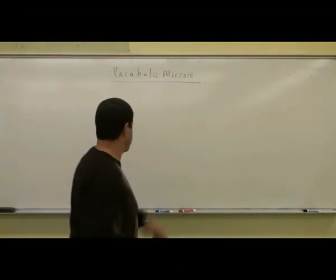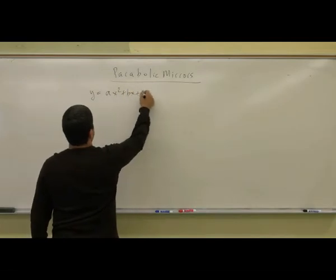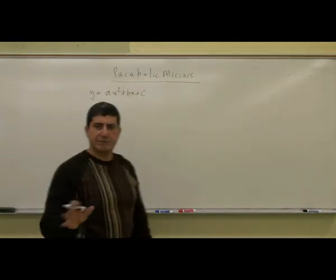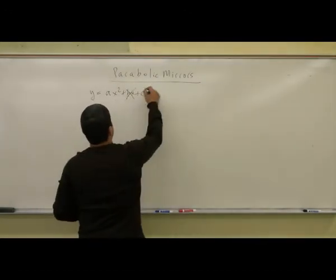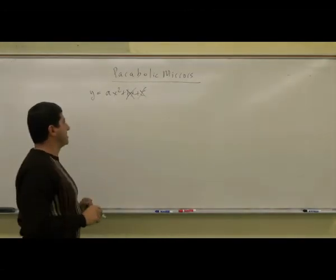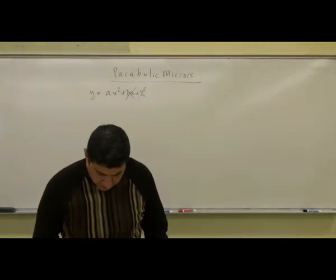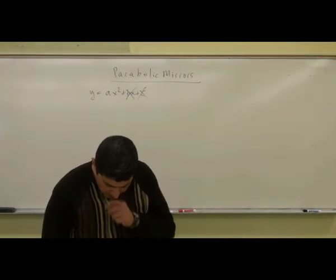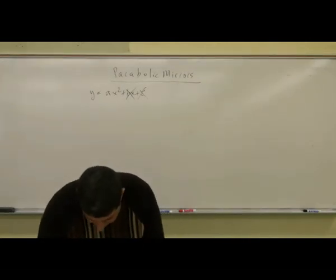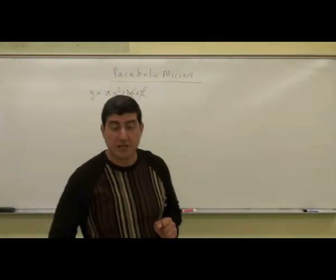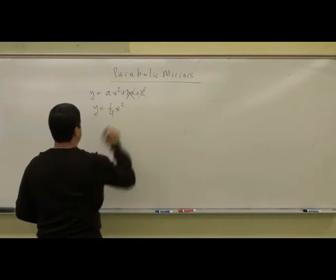Let's choose a parabola. Parabolas can be of the form ax² + bx + c, but to make it simple, let's choose a parabola centered on the origin, so b and c are 0. I'm going to choose a particular parabola: y equals one-quarter x squared.